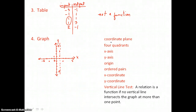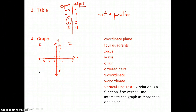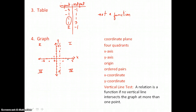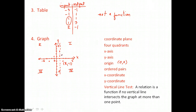Some terms we need to know in relation to our graph: the graph is a coordinate plane, which has four quadrants. Moving counterclockwise: first, second, third — usually labeled with Roman numerals — and fourth. The x-axis (horizontal) and y-axis (vertical) divide the coordinate plane into four quadrants. The origin is where the axes intersect, named by the ordered pair (0, 0). In an ordered pair, the x-coordinate comes first and the y-coordinate comes second.